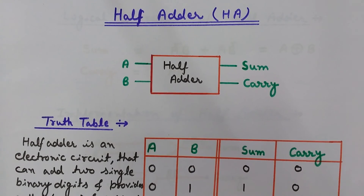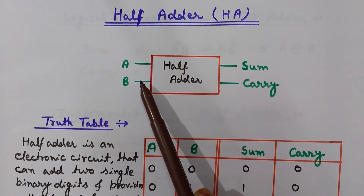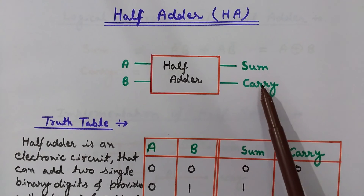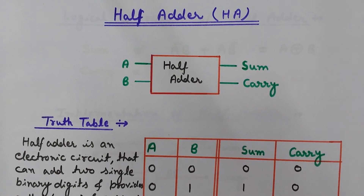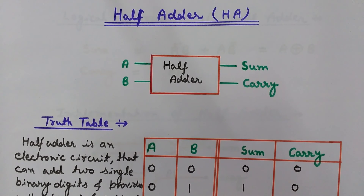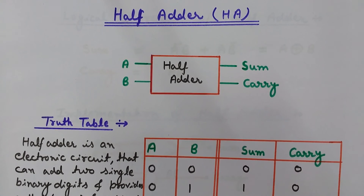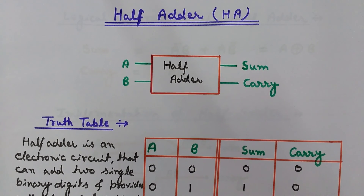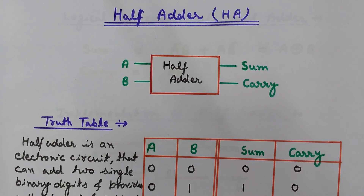Let's start with the diagrammatic representation of a half adder. You can see it has two inputs A and B and two outputs: sum and carry. A half adder is an electronic circuit that can add two single binary digits. It provides the sum of the two binary digits and the carry produced after the addition.